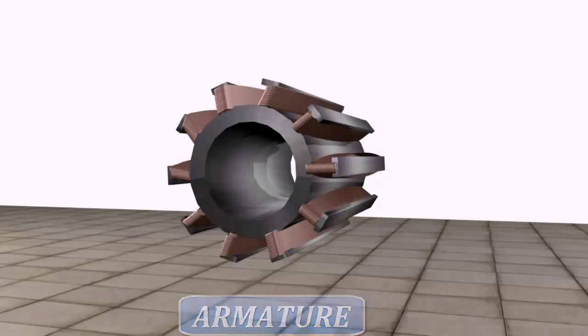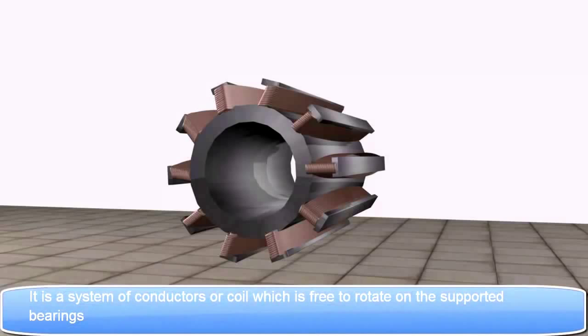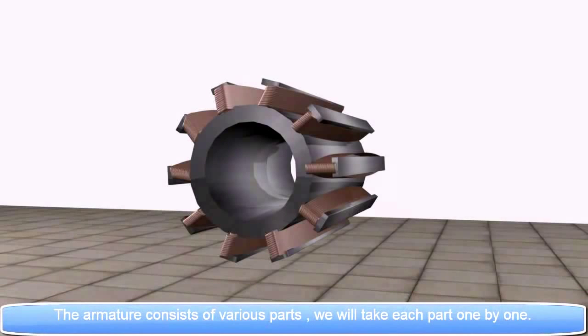Armature. It is a system of conductors or coil which is free to rotate on the supported bearings. The armature consists of various parts. We will take each part one by one.